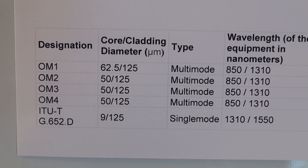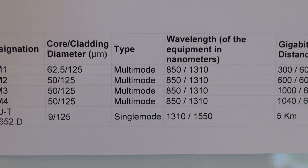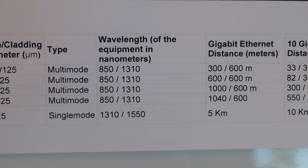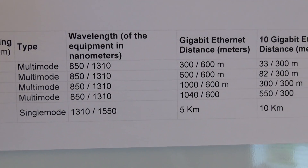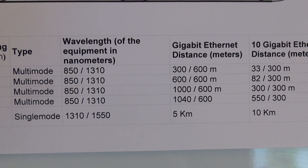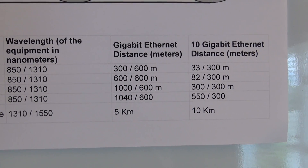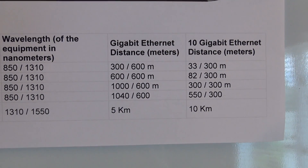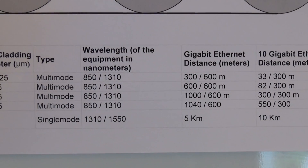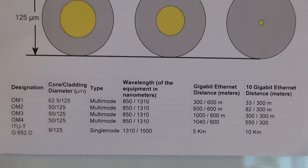The 62.5/125 micron, also known as OM1, is currently the most common multi-mode fiber used, and yet it has the lowest data carrying capacity and shortest distance limitations as compared with other multi-mode fiber types.